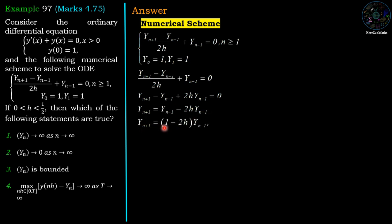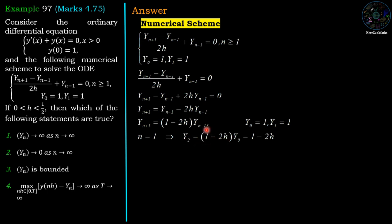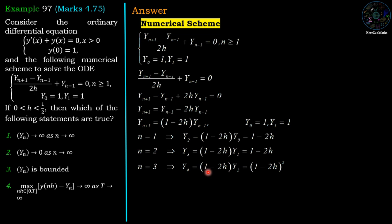We have y_{n+1} = (1 - 2h)·y_{n-1} with y_0 = 1 and y_1 = 1. For n = 1: y_2 = (1 - 2h)·y_0 = 1 - 2h. For n = 2: y_3 = (1 - 2h)·y_1 = 1 - 2h. For n = 3: y_4 = (1 - 2h)·y_2 = (1 - 2h)·(1 - 2h) = (1 - 2h)².